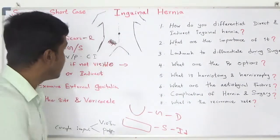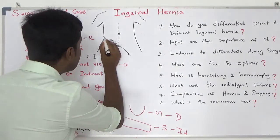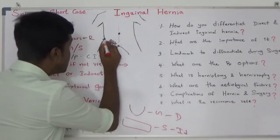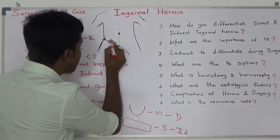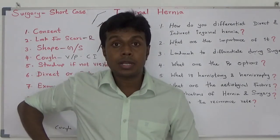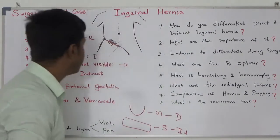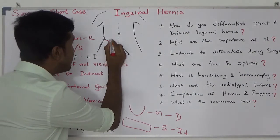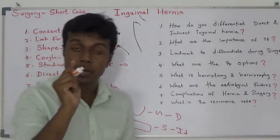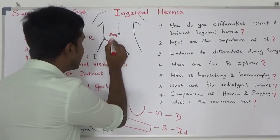Once you reduce it, identify the pubic tubercle and the anterior superior iliac spine. Your inguinal ligament runs from the anterior superior iliac spine to the pubic tubercle. Identify the midpoint of the inguinal ligament — one centimeter above that midpoint is the site of the deep inguinal ring.